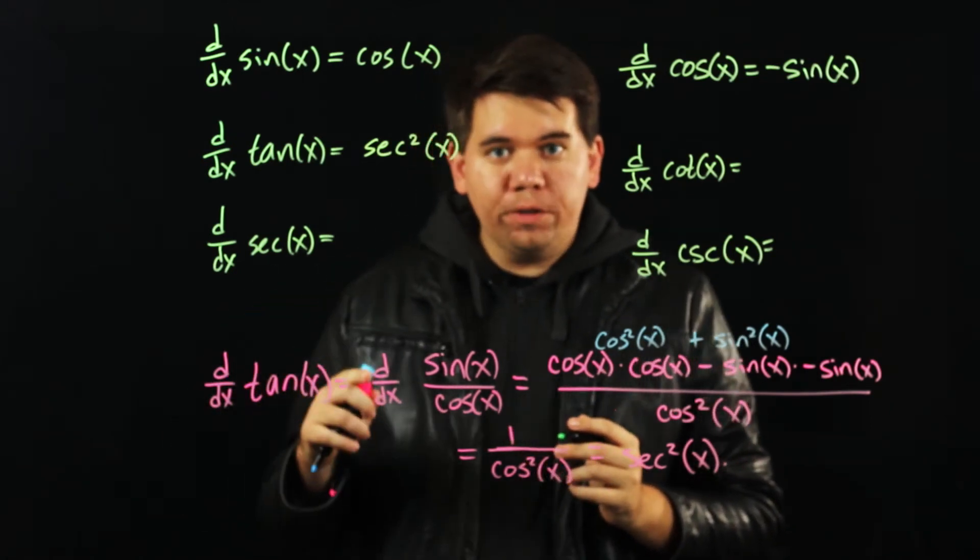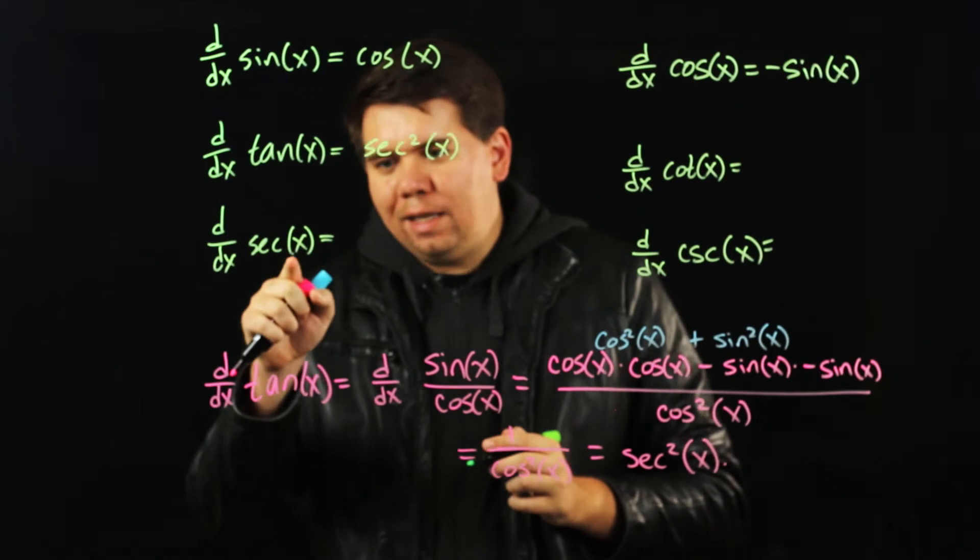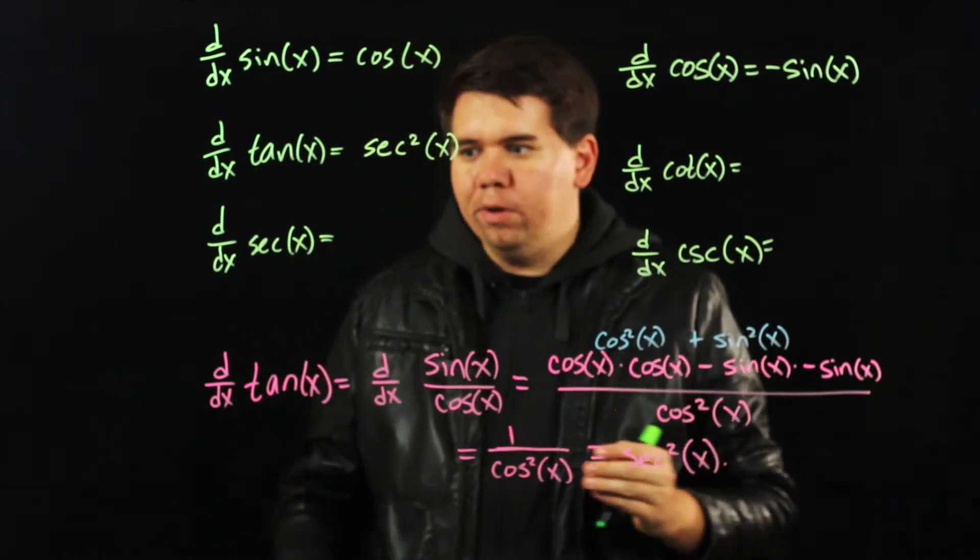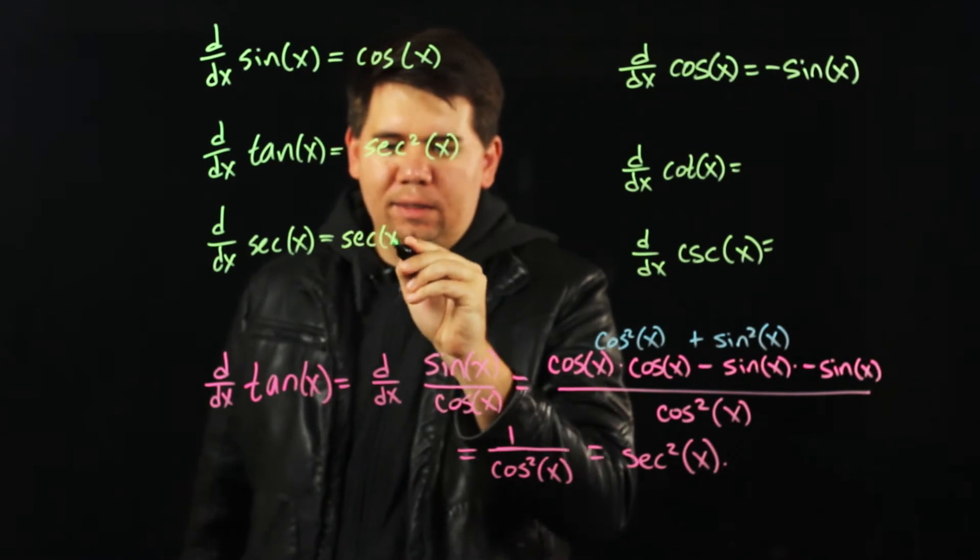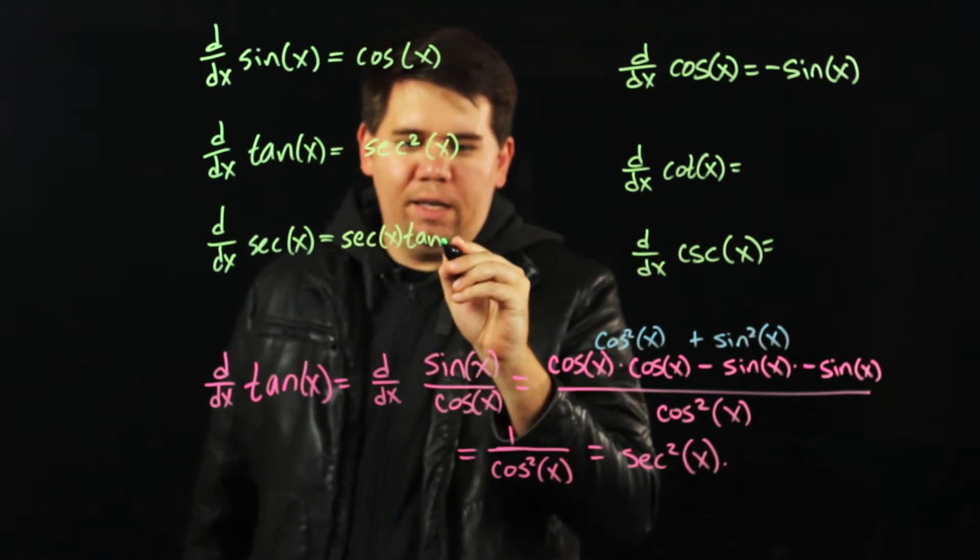Secant is just 1 over cosine. So I can rewrite secant as 1 over cosine, use my quotient rule, and find the derivative of secant comes out to be secant of x times tangent of x.